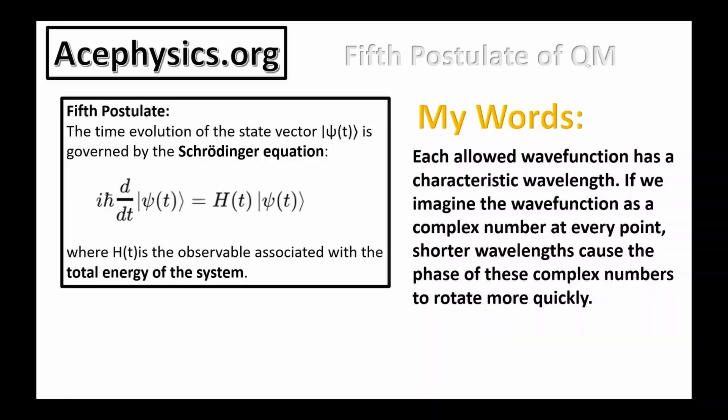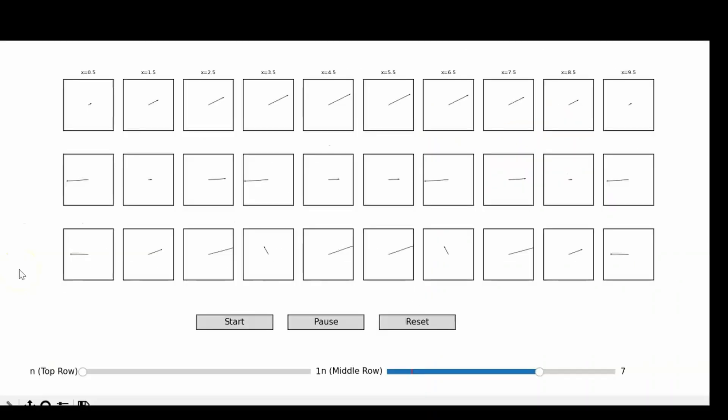The fifth and final postulate of quantum mechanics says the time evolution of the state vector, or the wave function, is governed by the Schrödinger equation. This is the Schrödinger equation, a simple wave equation. In my own words, the fifth postulate says each allowed wave function has a characteristic wavelength. If we imagine the wave function as a complex number at every point, shorter wavelengths cause the phase of these complex numbers to rotate more quickly.